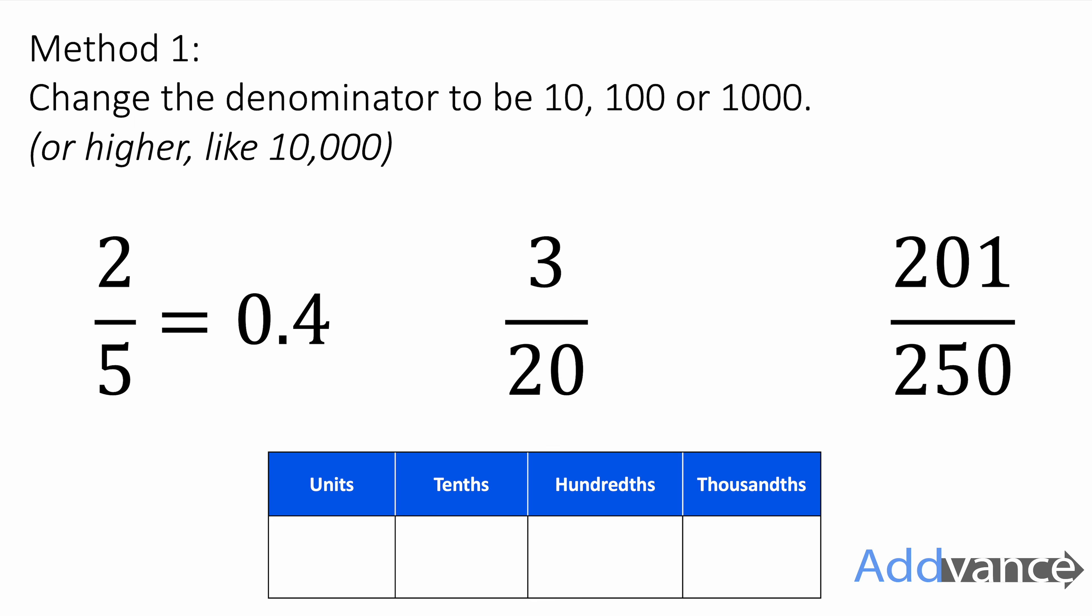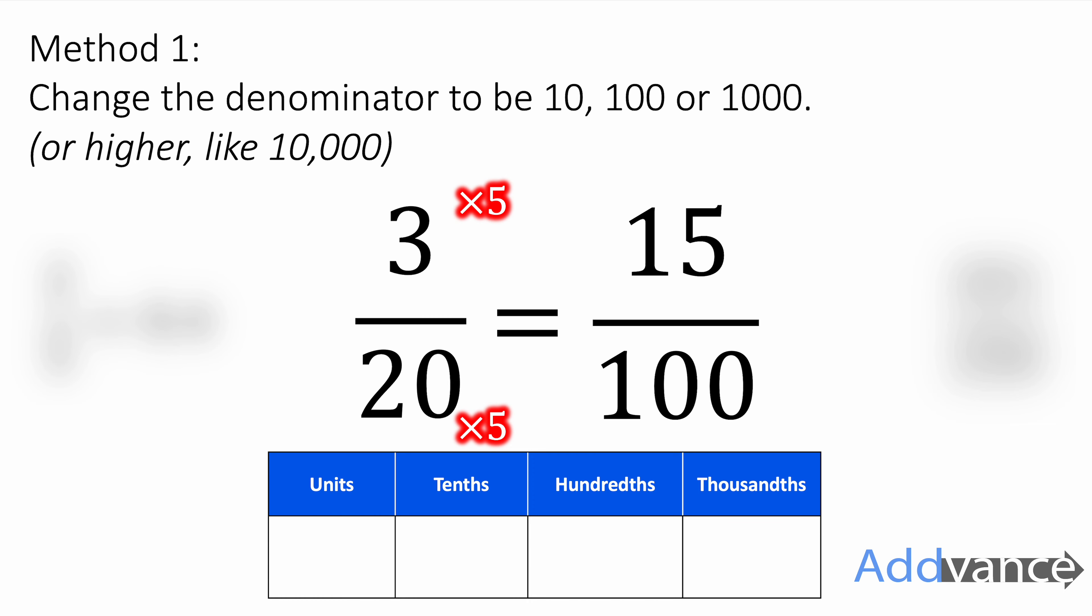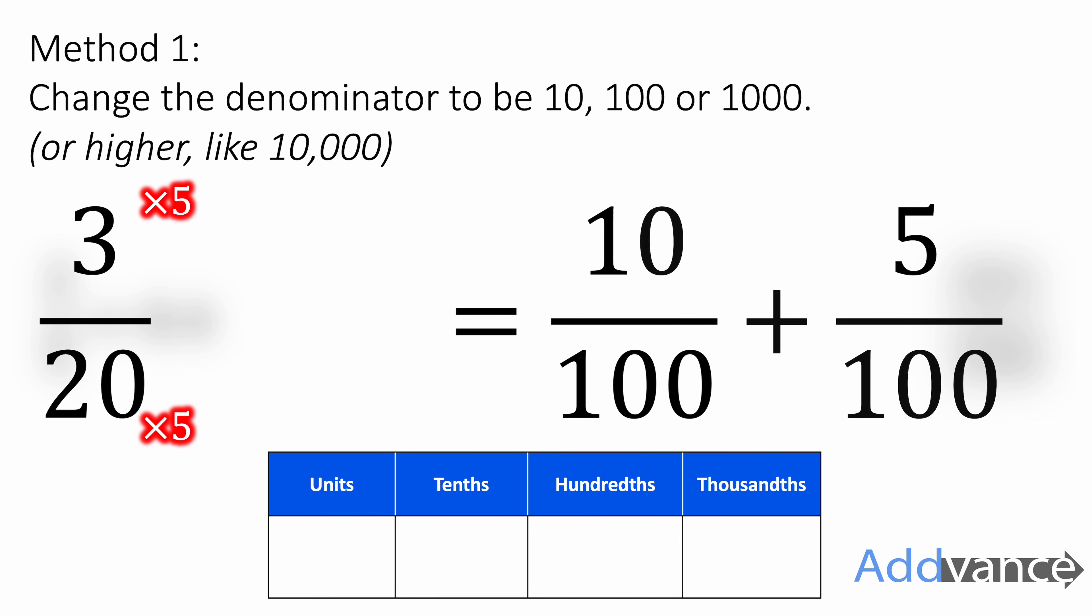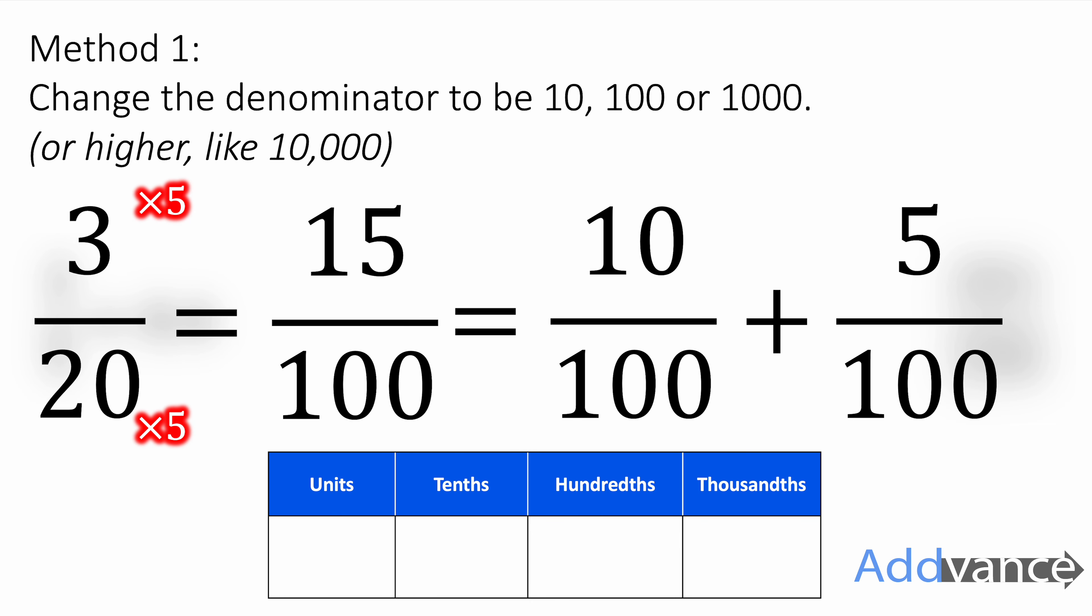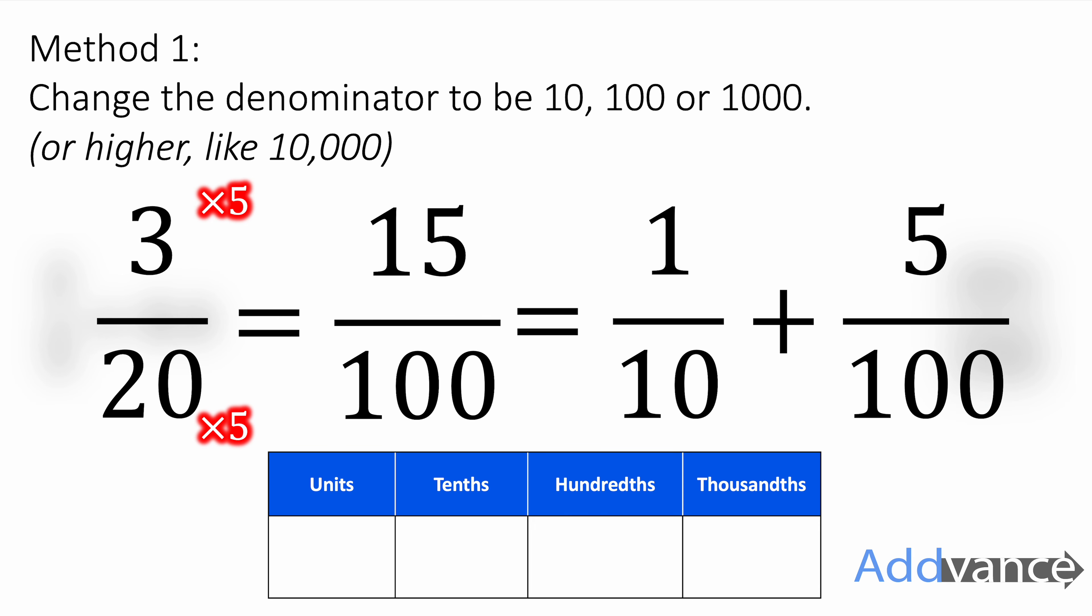Now three-twentieths, here we want to make the denominator 100 because we can do 20 times 5 is 100. Times by 5, we get 15 out of 100. This is the same as ten-hundredths plus five-hundredths. But ten-hundredths we can simplify to be one-tenth. So this is one-tenth and five-hundredths, 0.15.